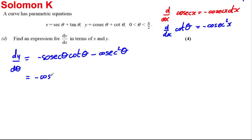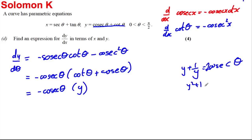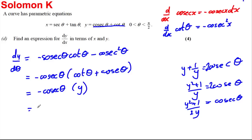Factorising out −cosec θ gives −cosec θ(cot θ + cosec θ). Since cosec θ plus cot θ equals Y, this becomes −cosec θ times y. From the earlier result, cosec θ equals (y² + 1)/(2y). Substituting in: −[(y² + 1)/(2y)] times y — the y's cancel — giving dy/dθ equals −½(y² + 1).